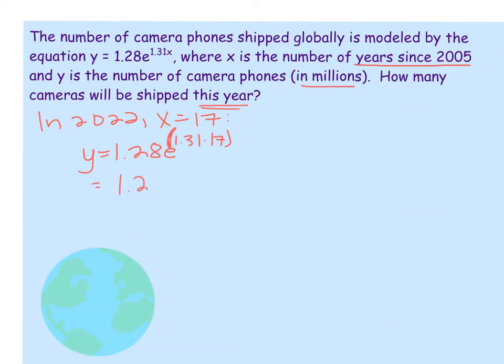So this is going to be 1.28, and you can actually just find that e and have it show up right there. And on most calculators, it either puts you up in the exponent location, or it gives you the caret. And then remember, just have a parentheses, 1.31 times 17.